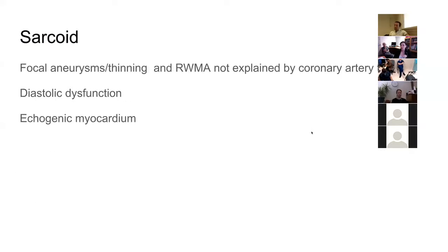Other causes of restrictive cardiomyopathy include sarcoid — classically with focal thinning or aneurysms, regional wall motion abnormalities not explained by coronary artery ischemia, patchy diastolic dysfunction, and a very echogenic myocardium. You'd only suspect it in someone already with a known diagnosis of sarcoid.